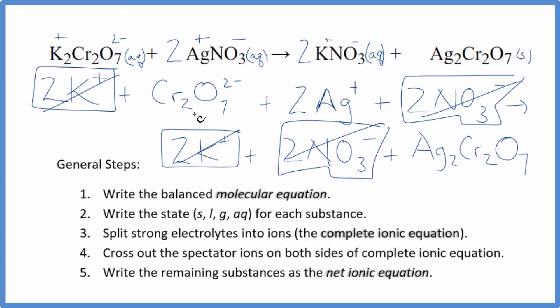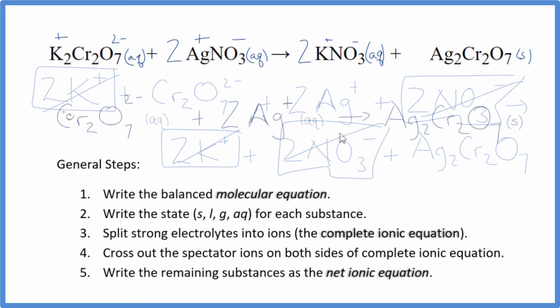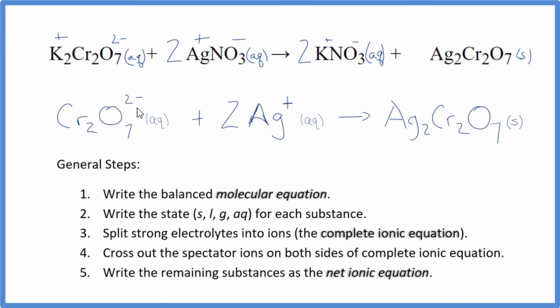I'll clean it up and write the states. This is the balanced net ionic equation for potassium dichromate plus silver nitrate. You'll notice charge is conserved. We have two minus here. Two times one plus, that's two plus. So these balance out give us zero. This is a neutral compound. Net charge is zero. If you add the atoms up, they'll be the same as well.